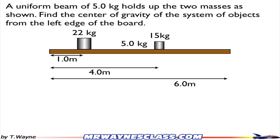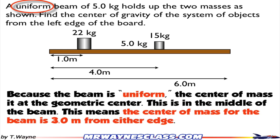First off, let's look at the wording of the problem. It says it's a uniform beam. What that implies is that the actual center of mass of the beam itself, not everything, just the beam, that's the brown rectangle, that the center of mass is located at the geometric center of that shape. So in this case, it's right in the middle of the beam, or 3 meters from either edge.